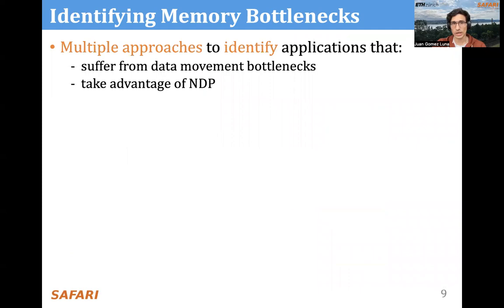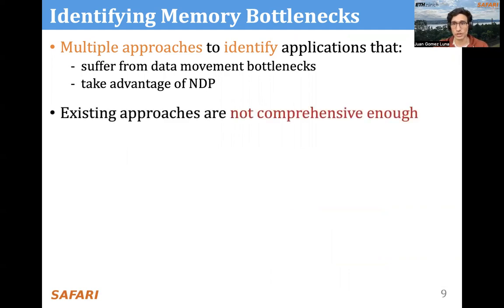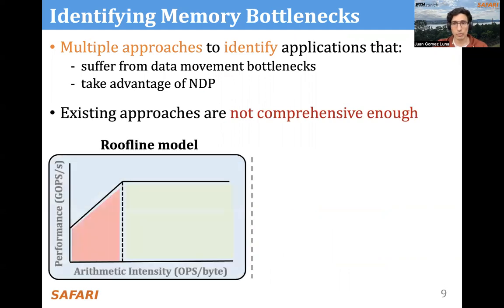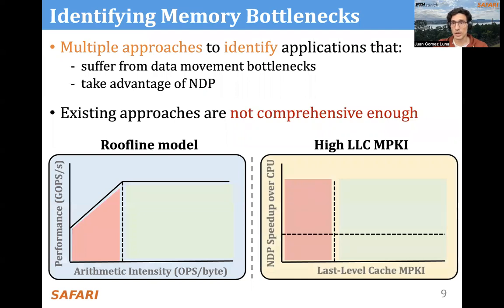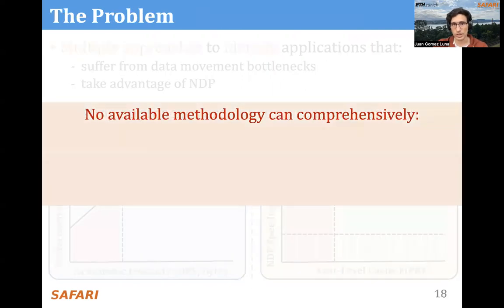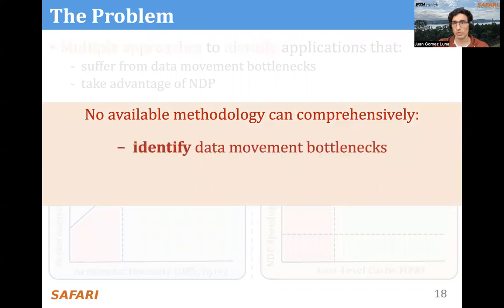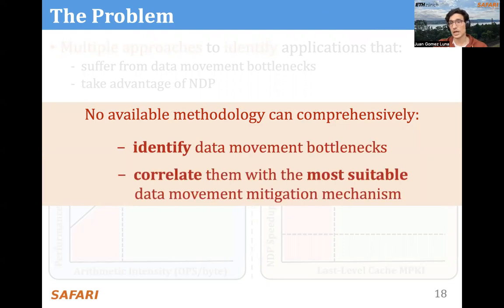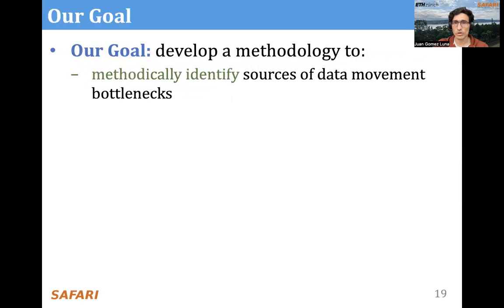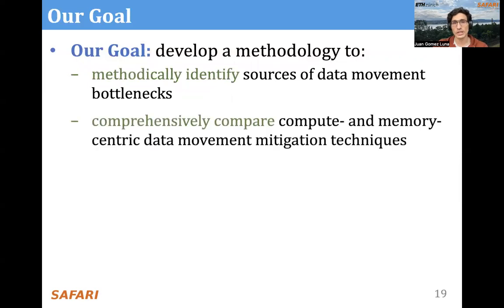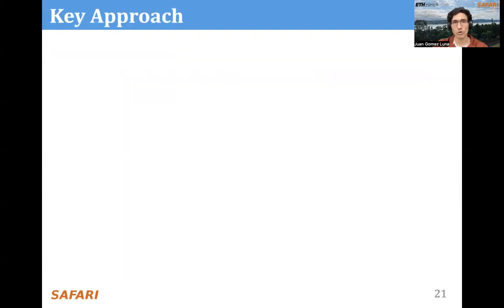How to identify the memory bottlenecks? There are multiple approaches to identify applications that suffer from data movement and can take advantage of near data processing. However, existing approaches are not comprehensive enough. We talk about approaches such as the roofline model or the analysis of misses per kilo instructions in the last-level cache — metrics frequently used to identify memory-boundedness and suitability for near data processing. However, these methodologies are not comprehensive when it comes to identifying data movement bottlenecks and correlating them with the most suitable mitigation mechanism.